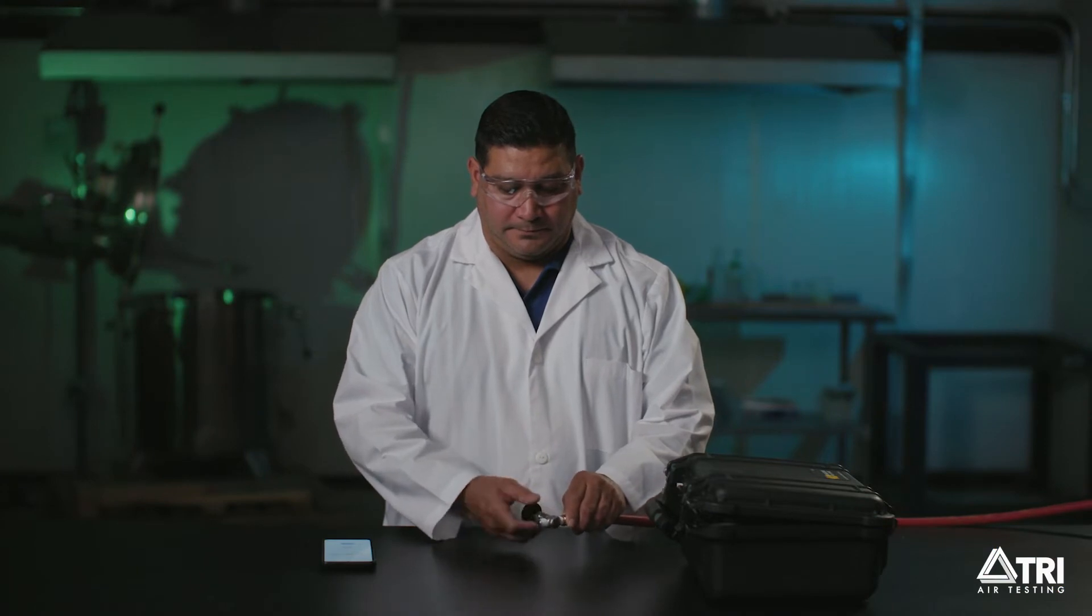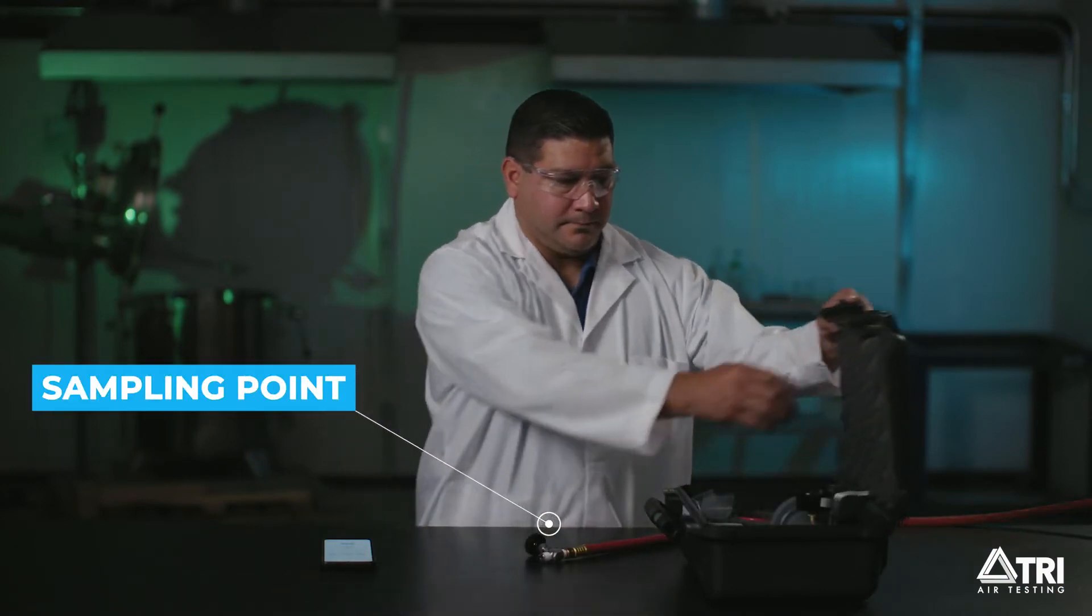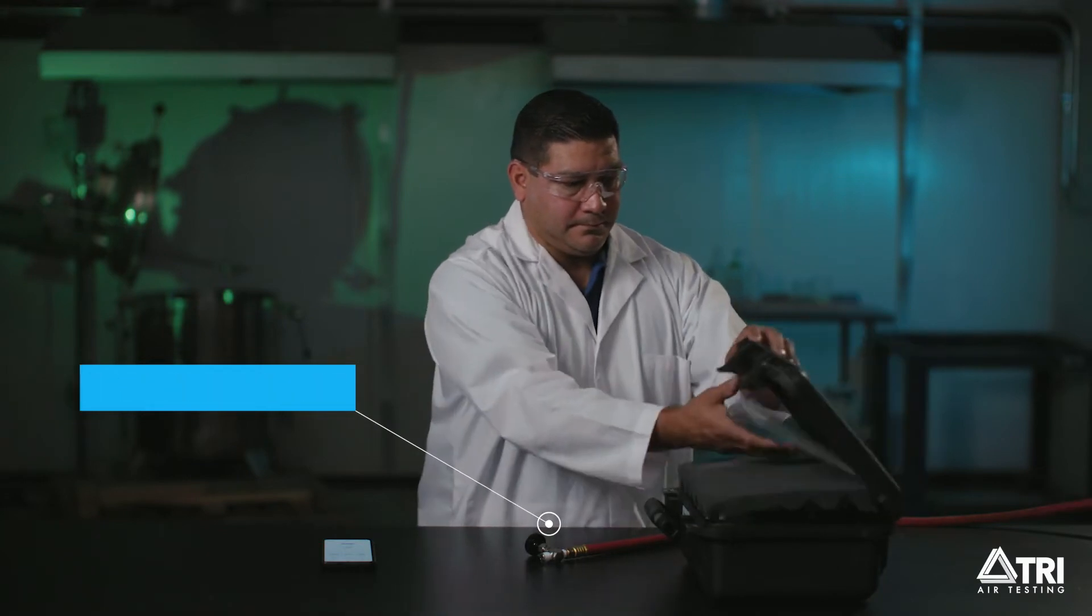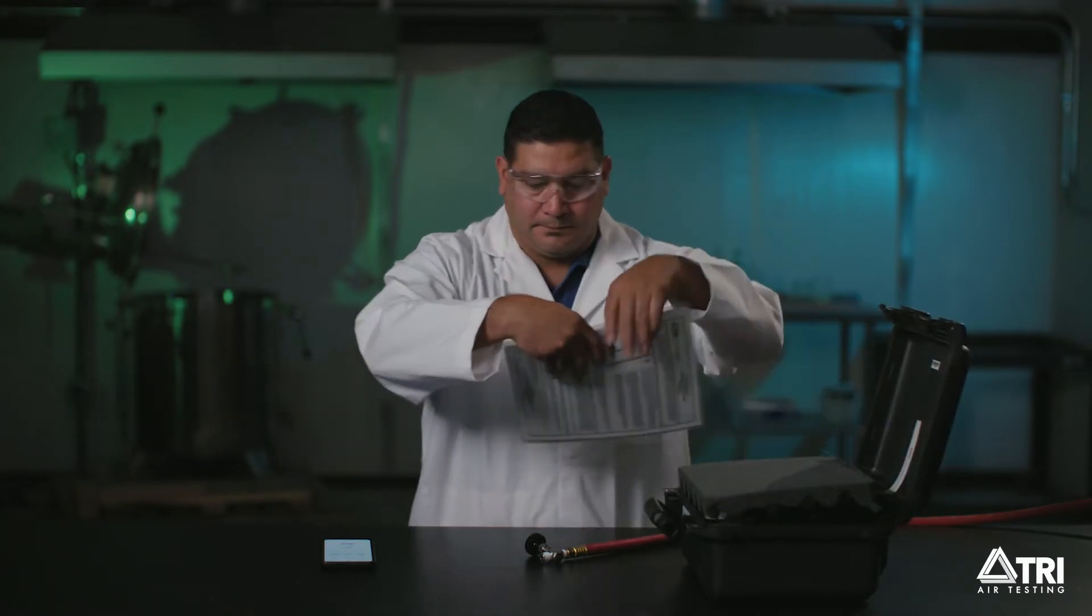Allow your compressor to run with air flowing from the sampling point, which is located here, for at least five minutes before sampling. While that is running, grab your data sheets, which are located behind the foam lid.